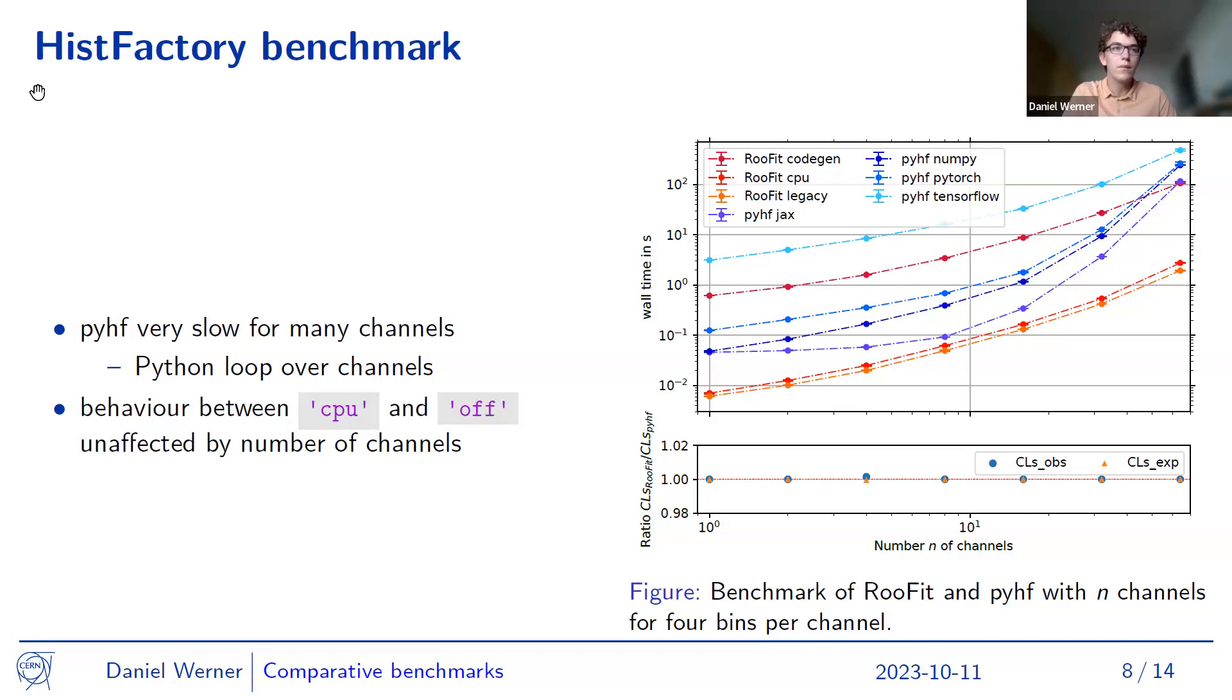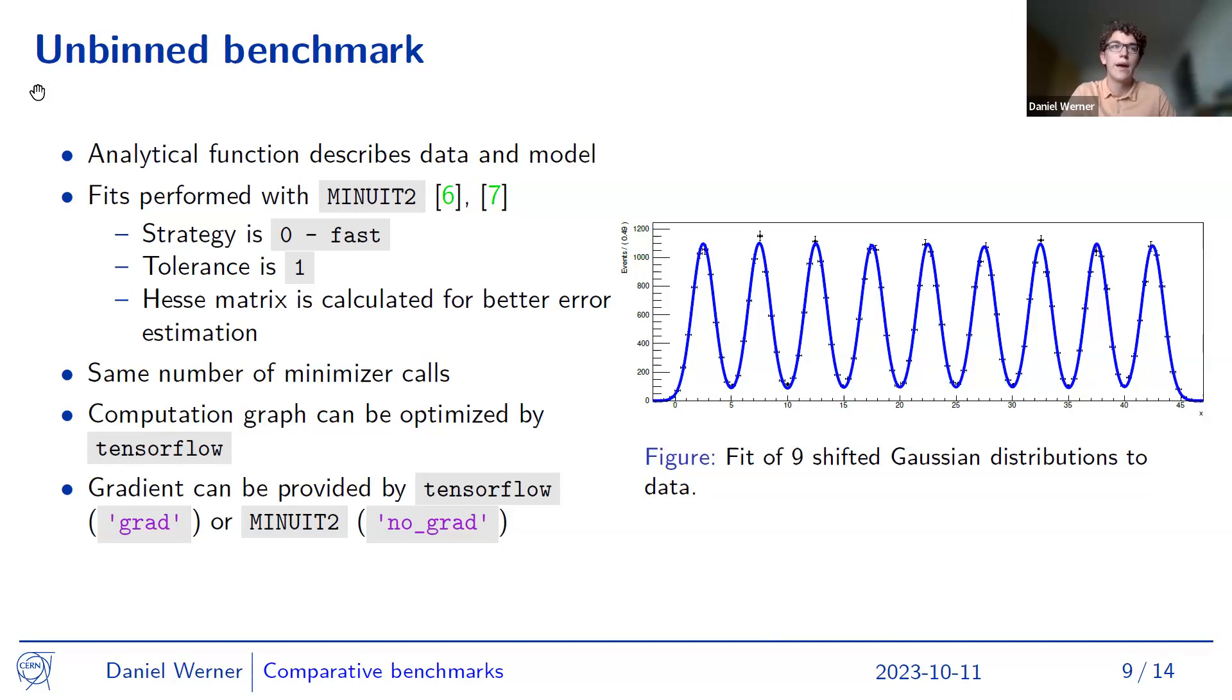And then I also did an unbinned benchmark, especially of RooFit and ZFIT. There I had an analytical function that described the data in the model, and we can see it on the right. So we have just nine Gaussian peaks with different parameters. And then I fitted the function to the sample values. So there's a fit converged. And again, the options are set identically for all frameworks, and this time we do calculate the Hesse matrix, because we are in such a fit interested in the best fit values and their errors.